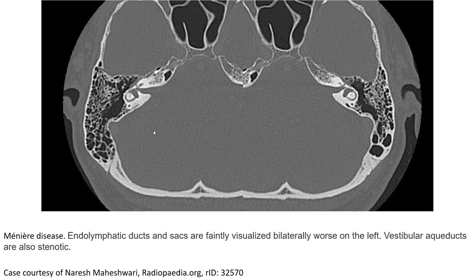This is another case of Meniere's disease. The endolymphatic duct and sac are poorly visualized bilaterally, worse on the left. The vestibular aqueducts are also stenotic.